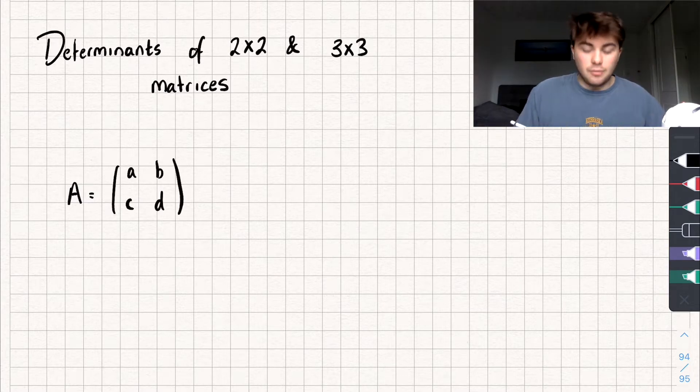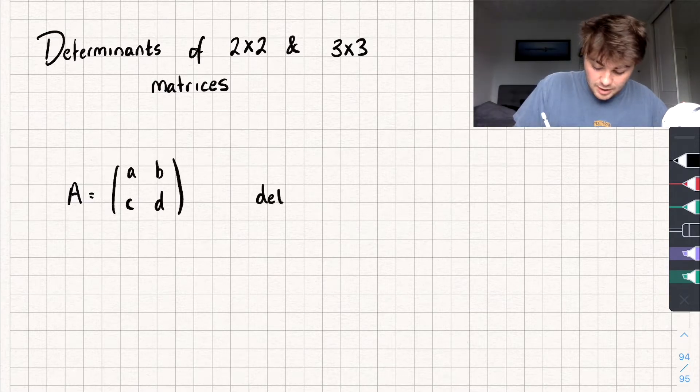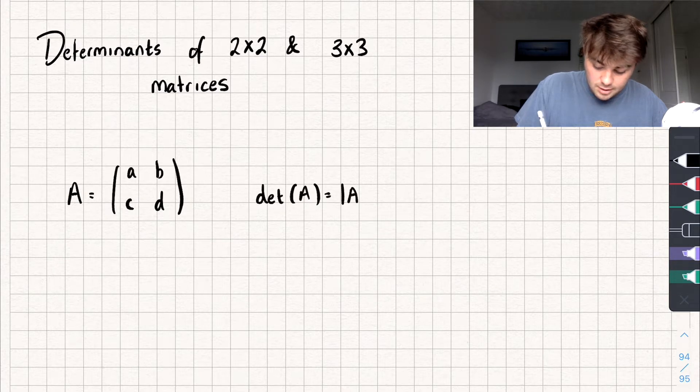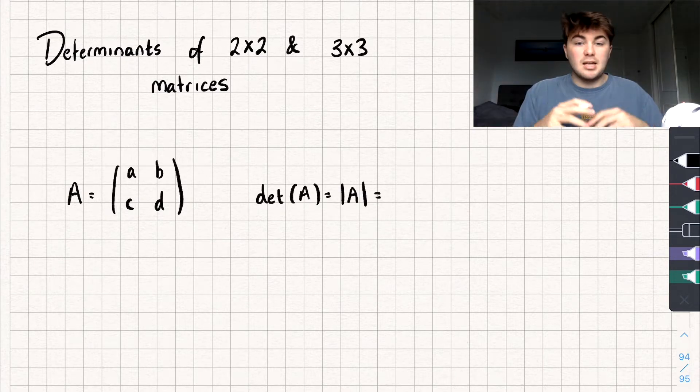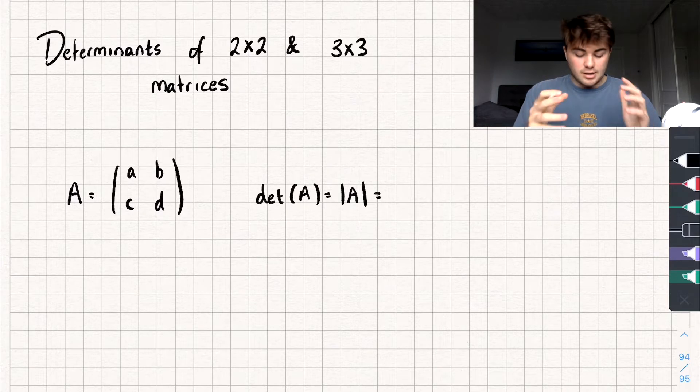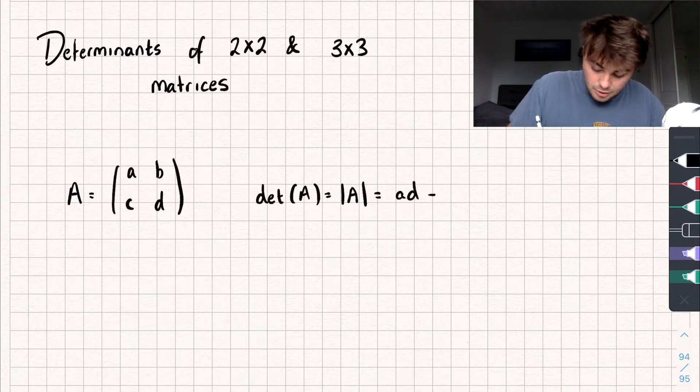To find the determinant of A, or we could write it as the det of A like this, or we could also write it like this, what I'm going to do is elements a and d multiplied together, and then subtract elements b and c multiplied together. So it's equal to ad subtract bc.